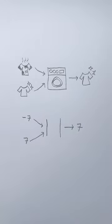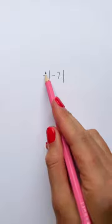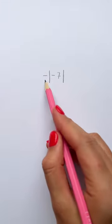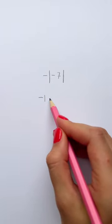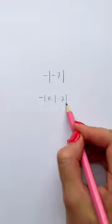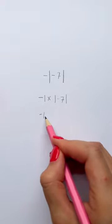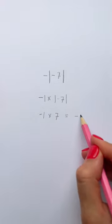Now, what if you have a negative sign in front of your absolute value? Well, this is the same as saying negative 1 times your absolute value. So negative 1 times a positive number will always be negative.